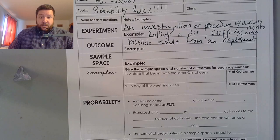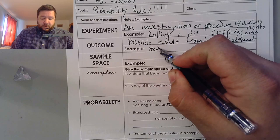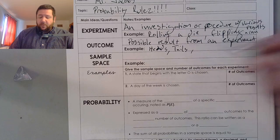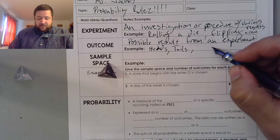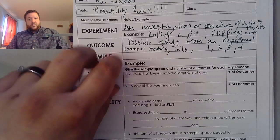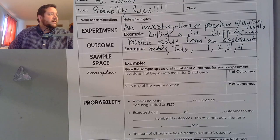So an example of this would be rolling a die, or flipping a coin, or pulling a marble from a bag, something like that. Now, an outcome is a possible result from an experiment. So, what are our possible results? We could have heads or tails.